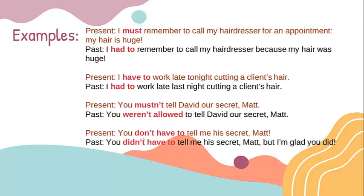Example. Present: 'I must remember to call my hairdresser for an appointment. My hair is huge.' The past would be: 'I had to remember to call my hairdresser because my hair was huge.' As you can see, instead of using 'must,' we use 'had to.'